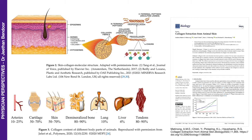Here is a graphical representation of tropocollagen. One has to remember that collagen has three amino acids that are in abundance: proline, hydroxyproline, and glycine. Looking at collagen content in different body tissues: arteries have about 10–25%, cartilage 50–70%, skin 50–70%, demineralized bone 80–90%, lungs 10%, liver 4%, and tendons 80–90%.